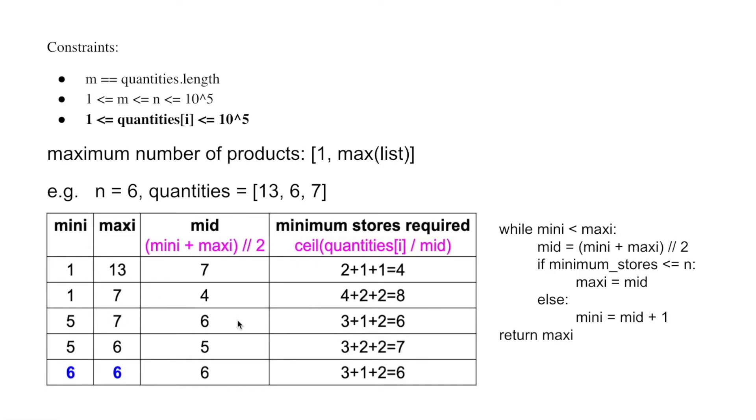Now the new mid becomes 6. The minimum stores required is 6. It's the same as the given store number. This doesn't mean we found the answer, because the range is from 5 to 7. There are still a few options, so we change the upper limit to 6.